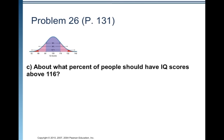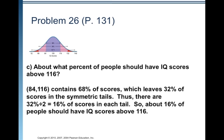About what percent of people should have IQ scores above 116? 84 to 116 contains that central 68 percent of the scores, which leaves 32 percent of scores to be in the symmetric tails. They have an identical percentage in each tail. So we can divide what's left over by two.